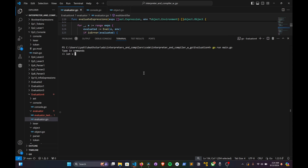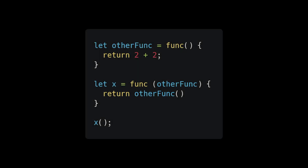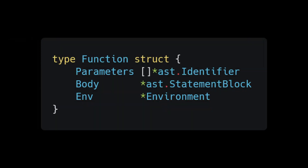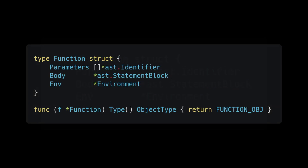Now it's time for the big kahuna — function calls. To get from where we are to the land of higher order functions we need a couple of things: first, design a function class in our object system, and second, a way to actually evaluate a function call. In the object package, add an object type for function. The struct stores a list of parameters, a statement block for the body, and a reference to an environment. Override the two object methods — the inspect method will be a little long but looks something like this.